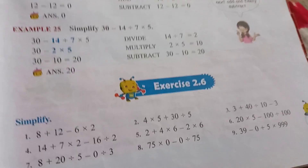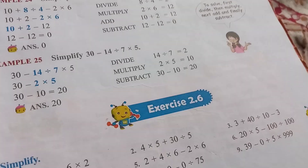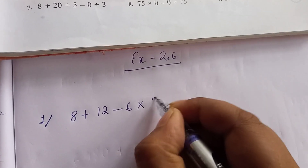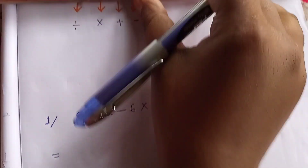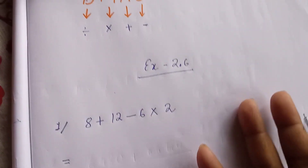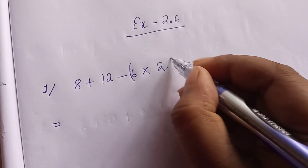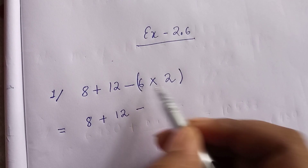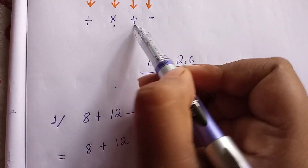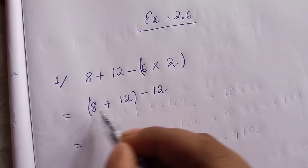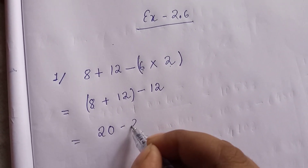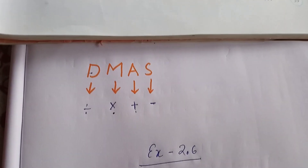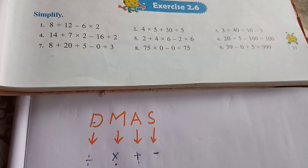Let's apply this DMAS rule to solve Exercise 2.6. Look at the first question: 8 plus 12 minus 6 into 2. According to DMAS, first you have to divide, but division is not here. Then we have to do multiplication — put a bracket around 6 into 2. 6 times 2 equals 12. After multiplication comes addition: 8 plus 12 equals 20, minus 12, which equals 8.